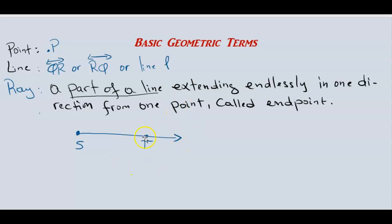To represent a ray, we use two points on it — for example, ST. The symbol for a ray goes on top of the letters, just like for a line, but it only has an arrow on one side. For a line, the symbol has arrows on both sides; for a ray, the arrow appears on only one side.